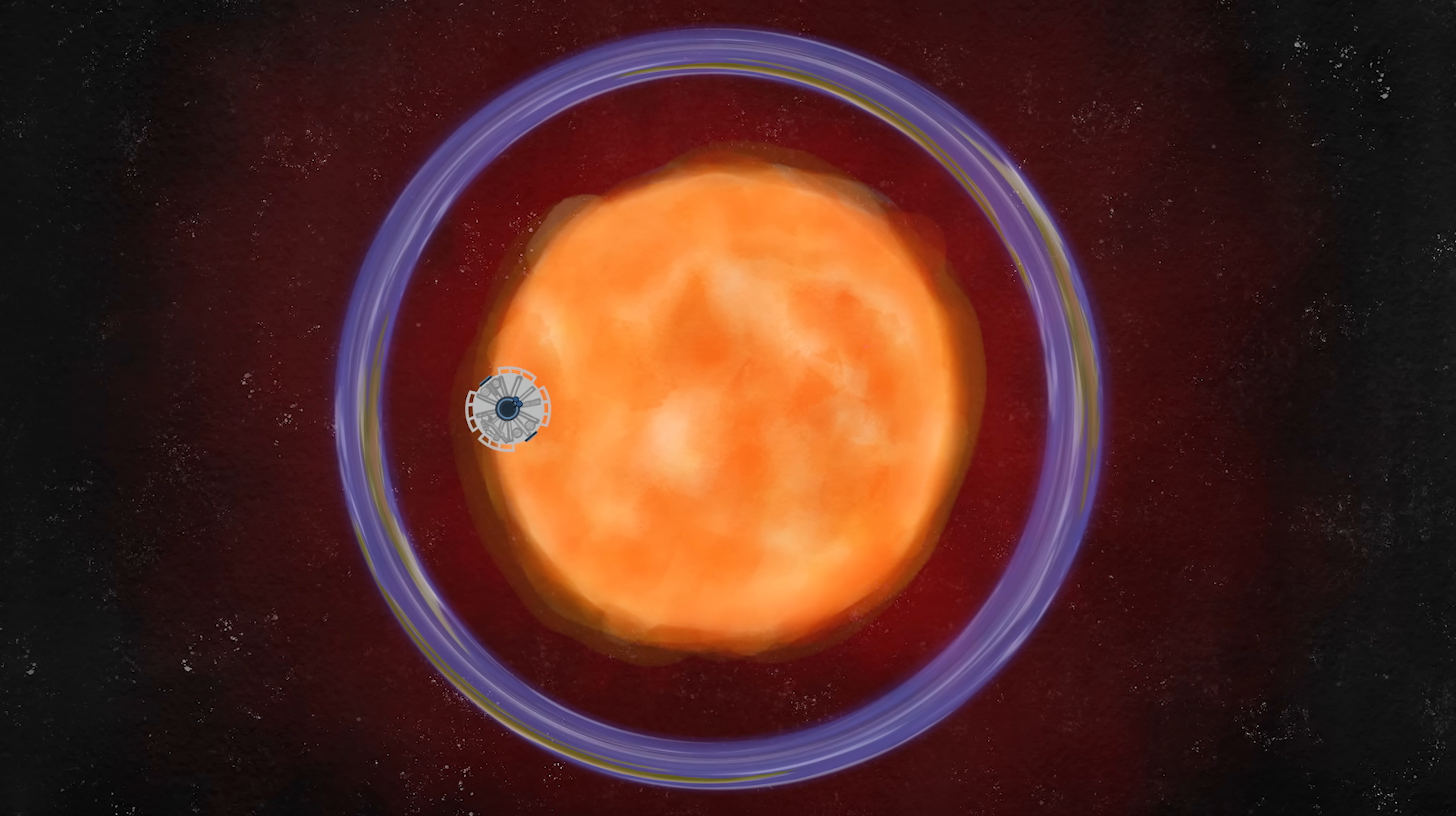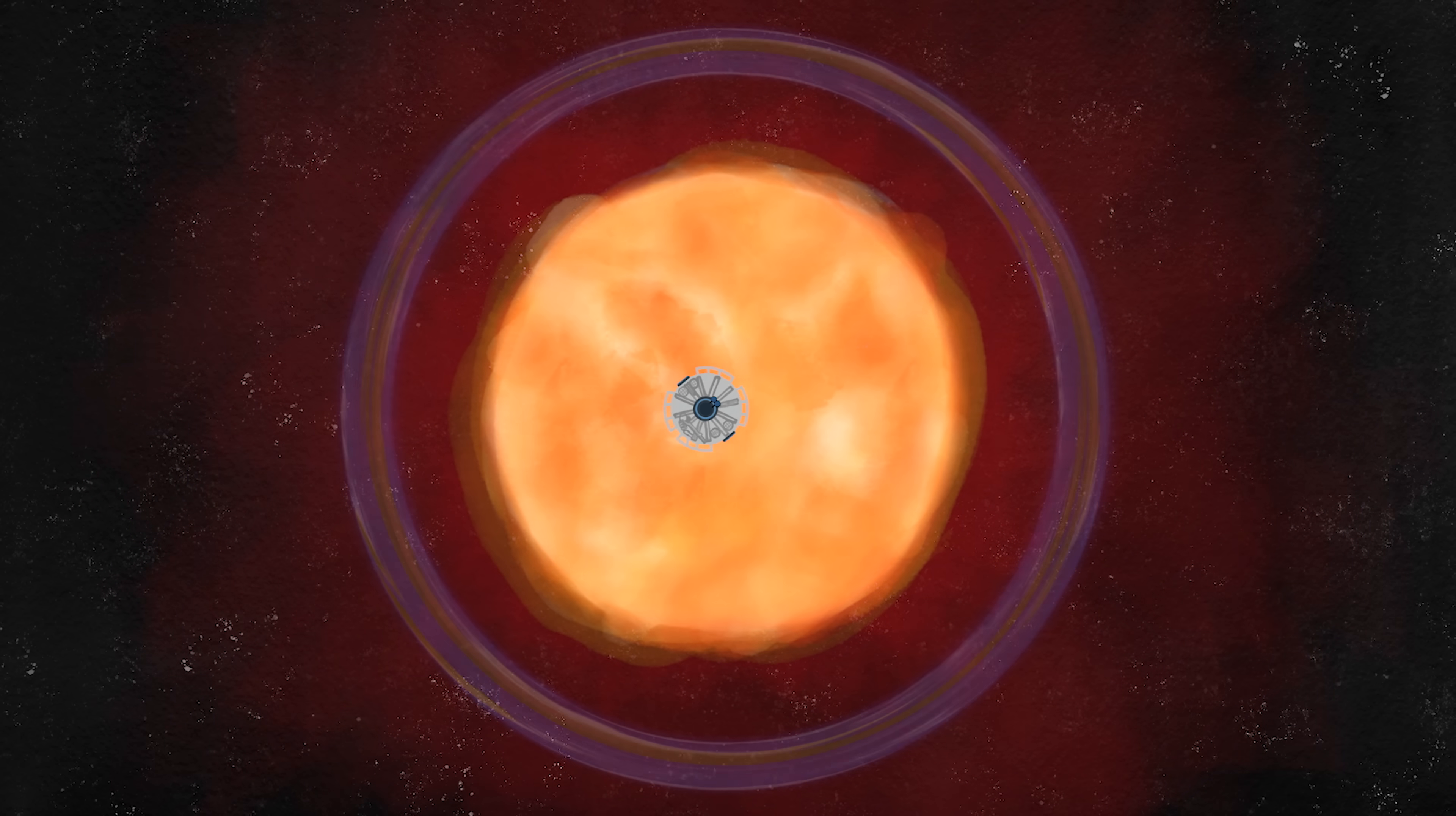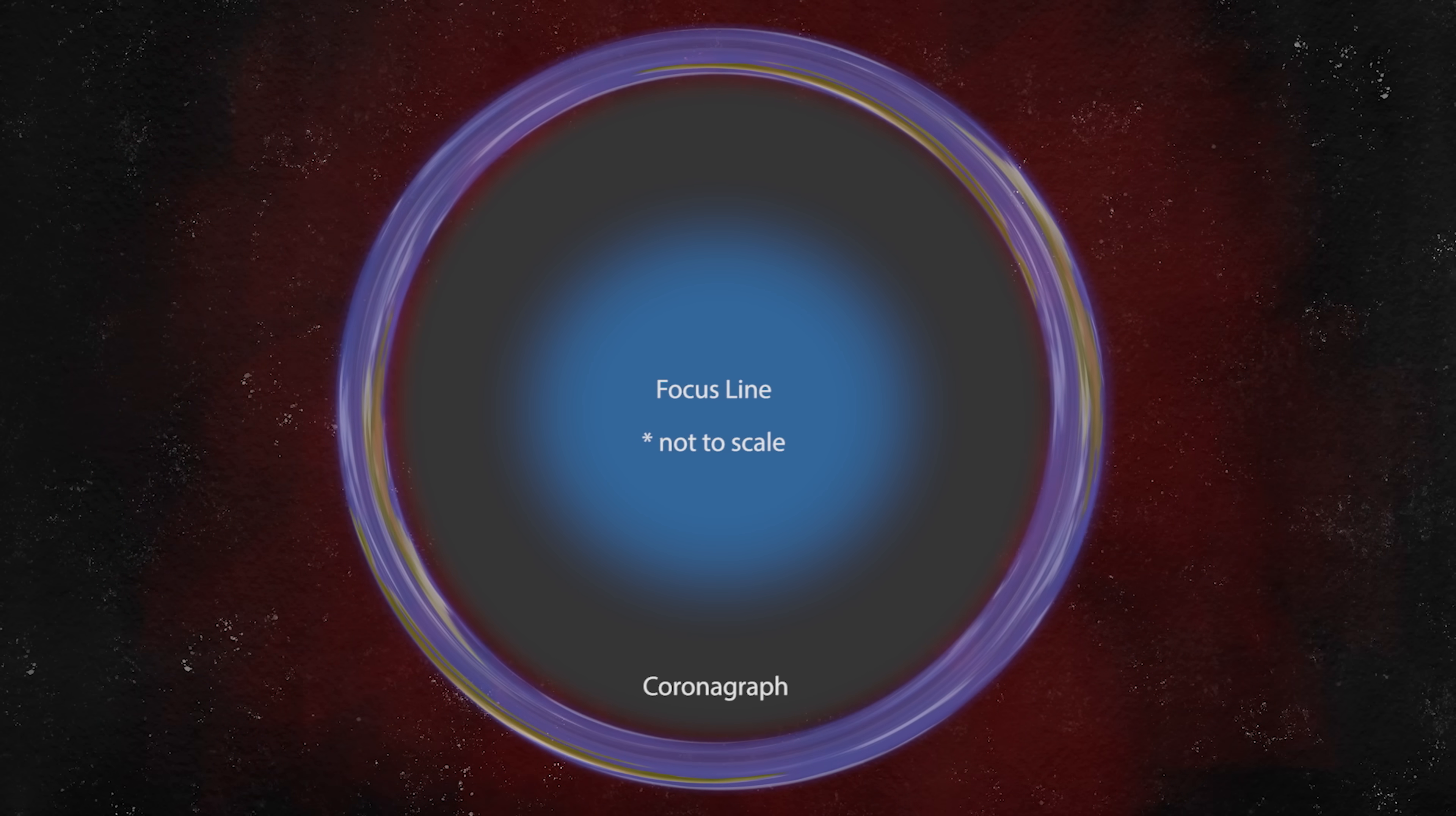The telescope needs to face the sun to image the exoplanet, but unsurprisingly, its light would outshine the exoplanet. Since the Einstein ring is around and outside the sun, an internal coronagraph can be used which blocks the sun and the brightest part of the corona.